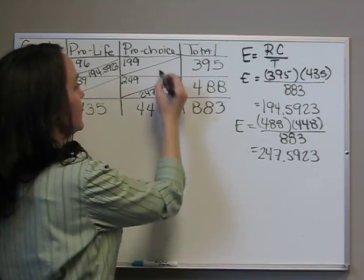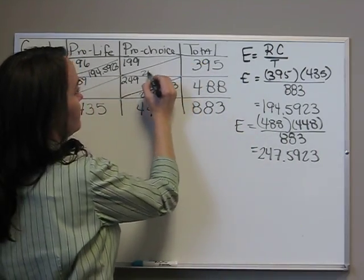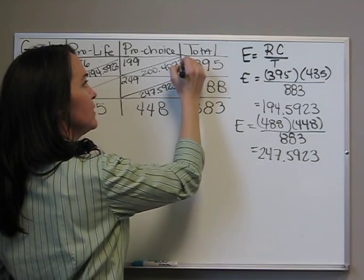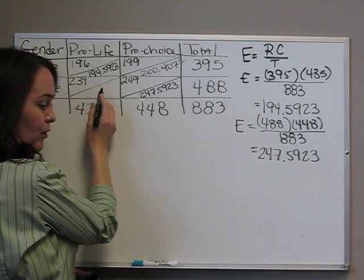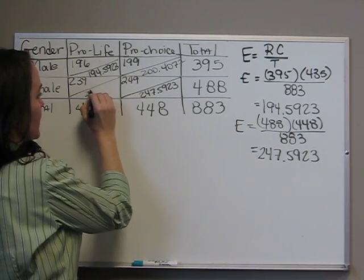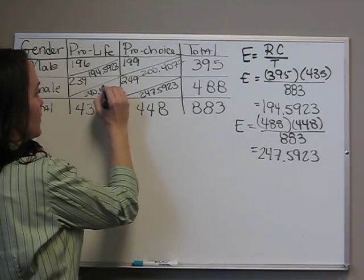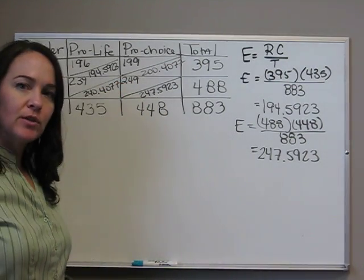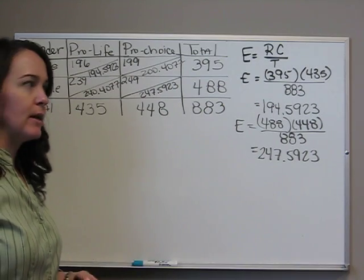Continuing, we also have for the male pro-choice 200.4077, and for the female pro-life 240.4077. They're all above 5, so we don't have to worry about whether our assumptions are met.